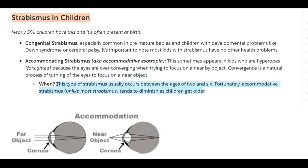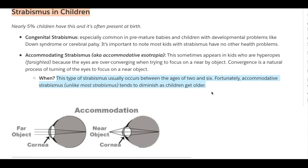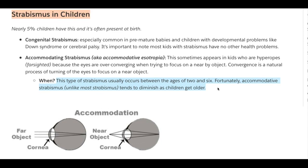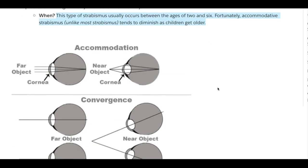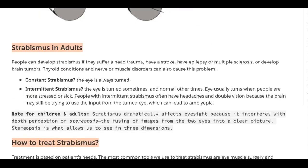This type of strabismus occurs between the ages of 2 and 6. Fortunately, accommodative strabismus, unlike most strabismus, tends to diminish as children get older — meaning this particular type actually goes away with age.